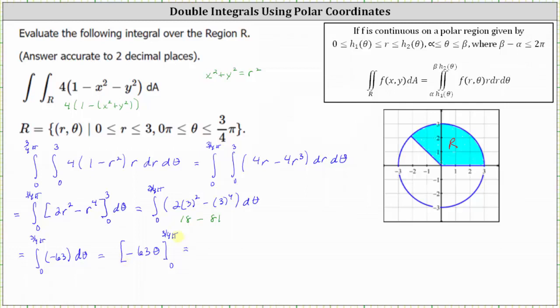And now we find big F of 3/4 pi minus big F of zero, which gives us negative 63 times 3/4 pi. And big F of zero is zero. Simplifying, negative 63 times 3/4 is equal to negative 189/4. And therefore the exact value is negative 189/4 pi.